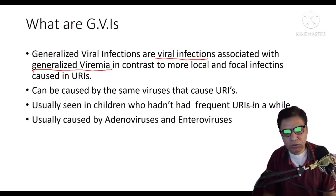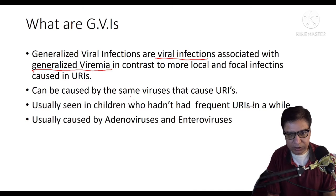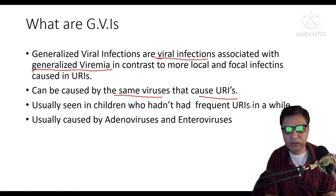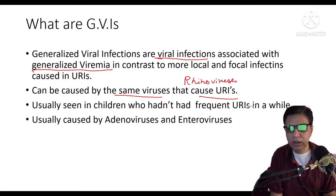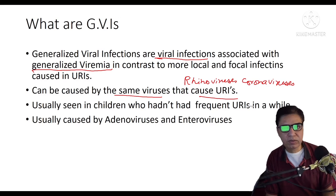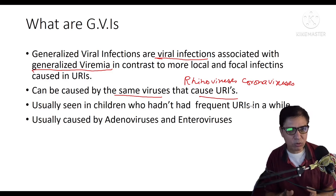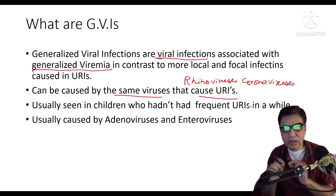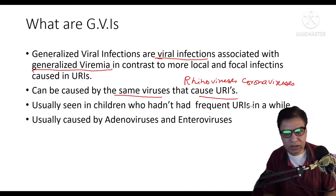Generalized viral infections are usually caused by the same viruses that cause upper respiratory tract infections. Most of the viruses that cause URIs are rhinoviruses, coronaviruses — not COVID but non-COVID coronaviruses — orthomyxoviruses, and flaviviruses. There are probably more than 200 different types of viruses that can cause upper respiratory tract infections, and among those same viruses, they can also cause a generalized viral infection.